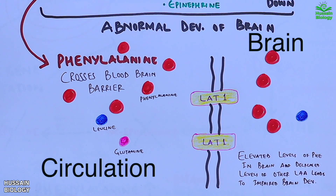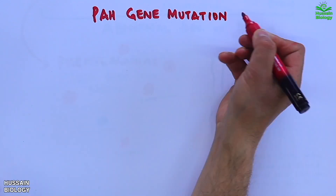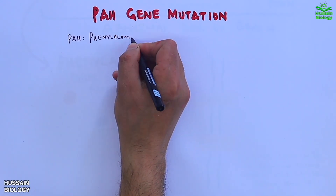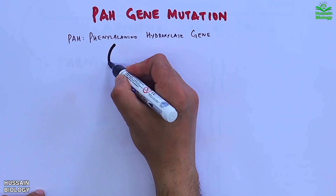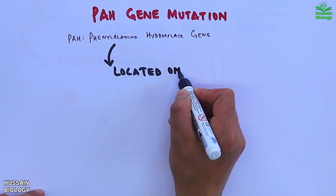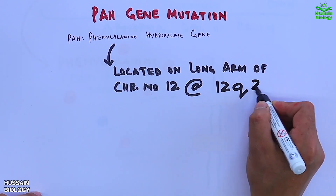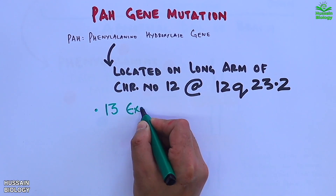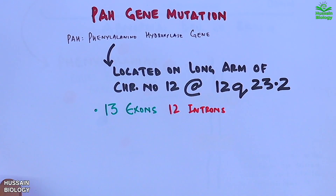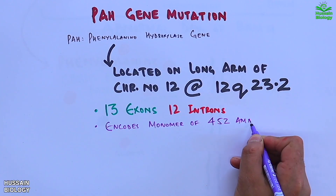Now let's see how the PAH gene mutation occurs. The PAH gene is located on the long arm of chromosome 12 at 12q23.2. It has 13 exons and 12 introns, which encodes a monomer of 452 amino acids.